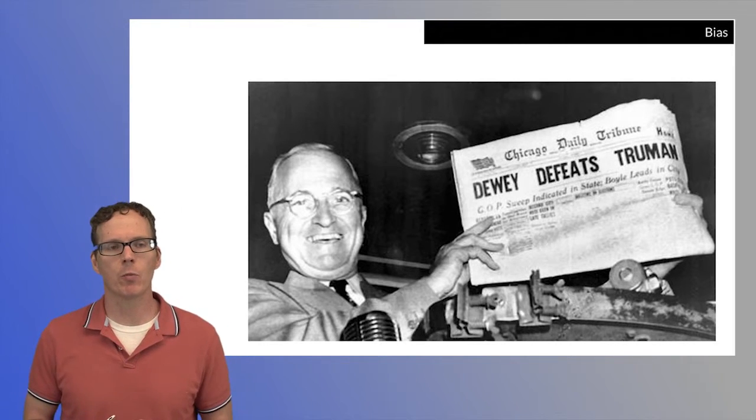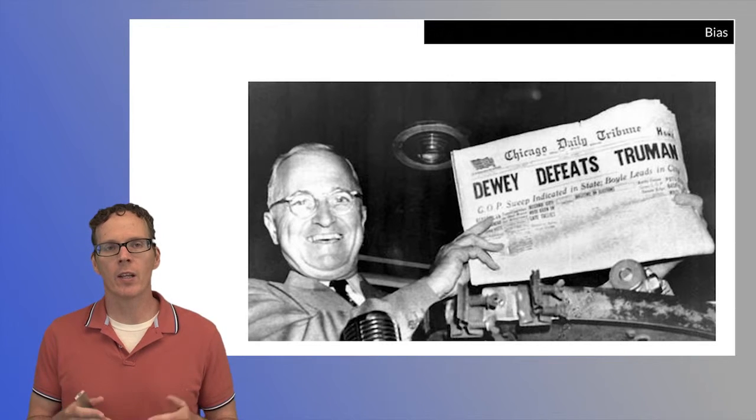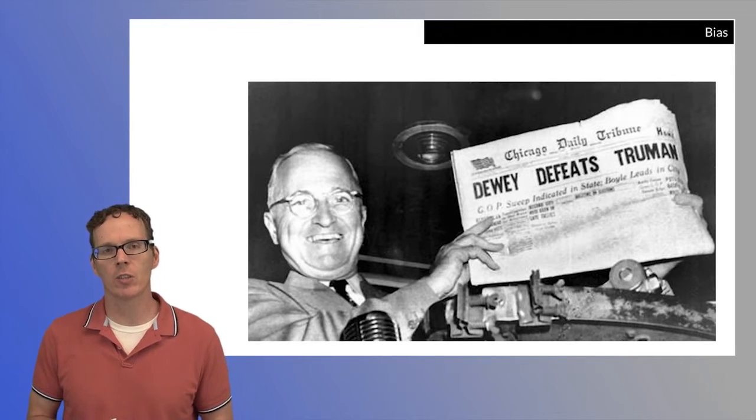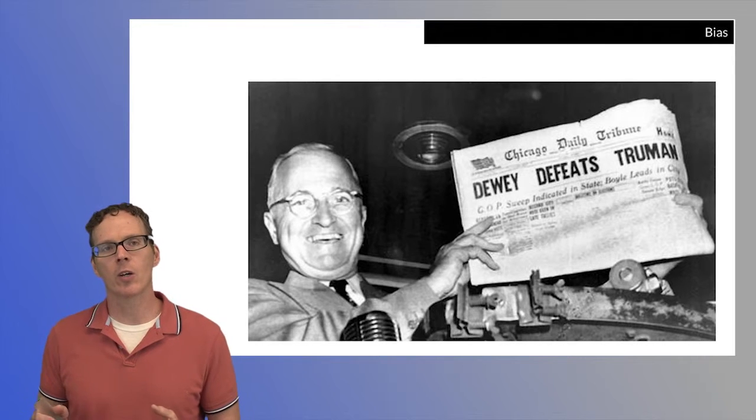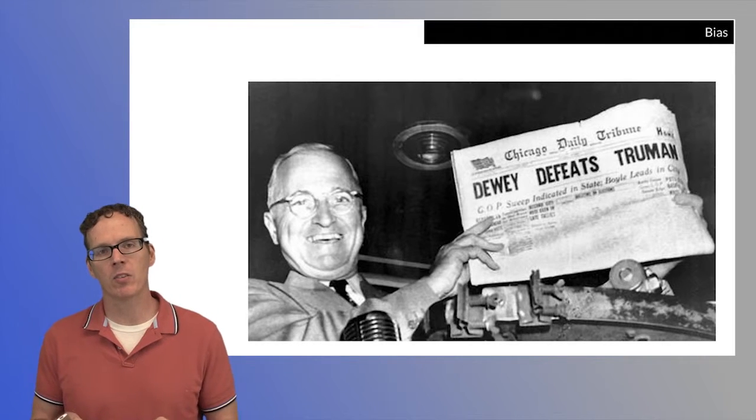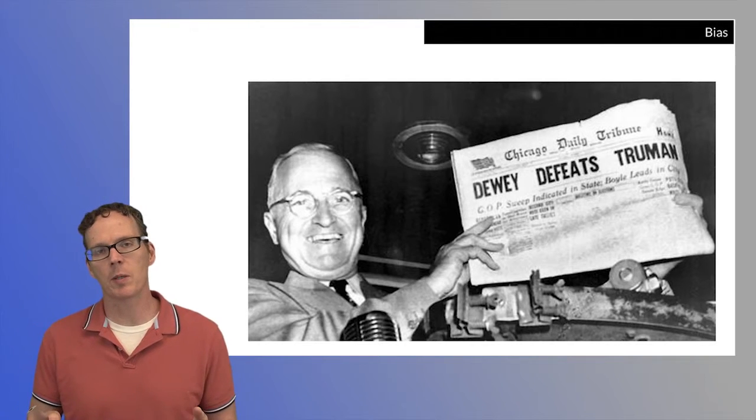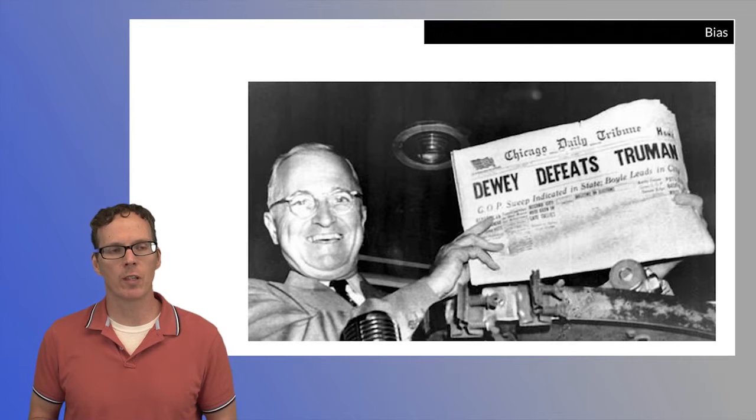And we'll give the specific example of when the Chicago Tribune announced errantly that Dewey defeated Truman in the presidential election. And much of their error was in a particular form of bias sampling. The collection of people that they polled weren't the right collection of people to make the conclusions that they were interested in.